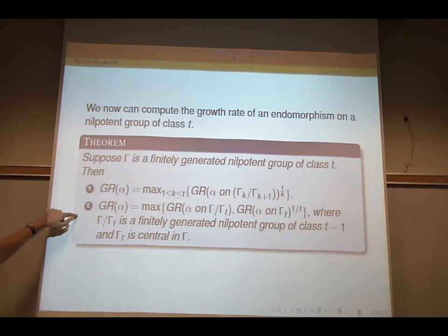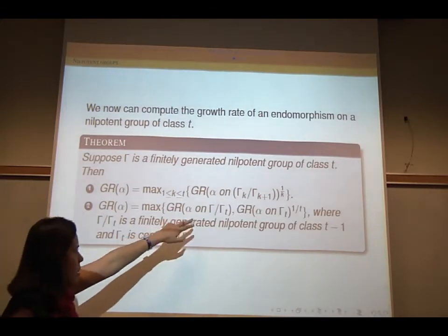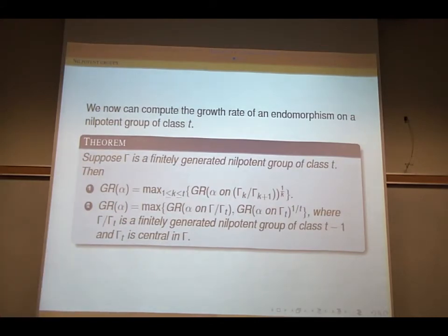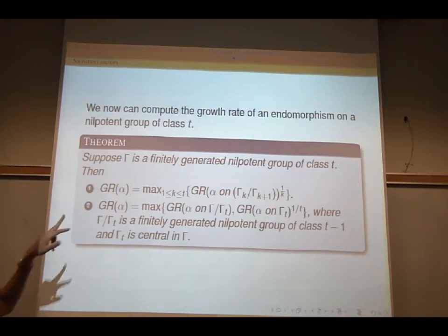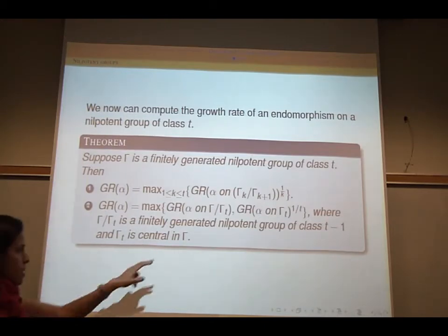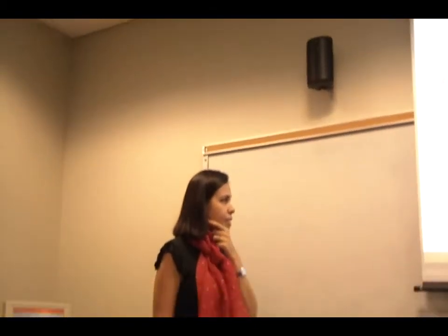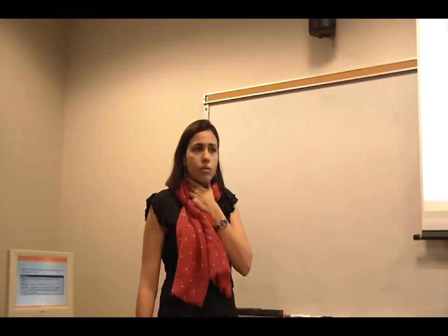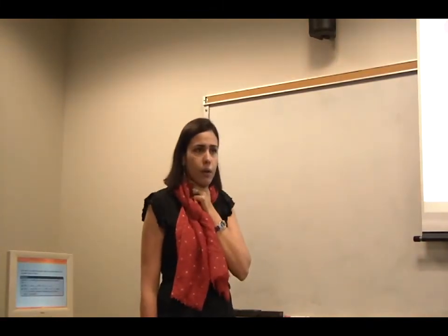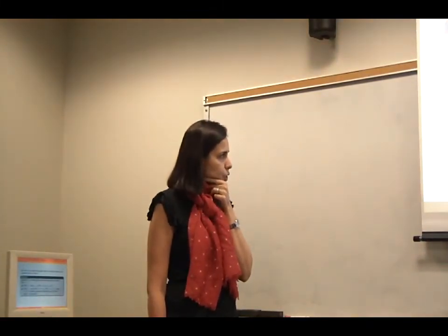This is equivalent to finding the maximum growth rate on gamma mod gamma_T, where this new group is a finite nilpotent group of class T minus 1, assuming that the class of the quotient group is T, and the growth rate of alpha on gamma_T to the power 1/T. And gamma_T is, as we all know, a simple fact: the abelian group is central over gamma.